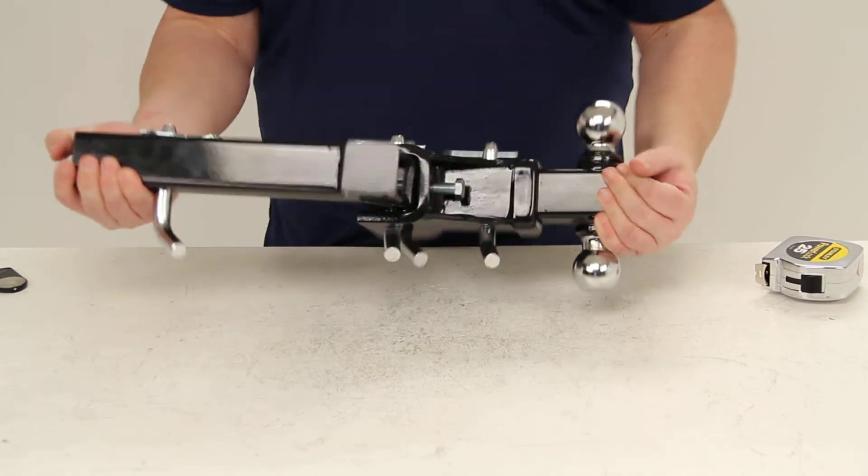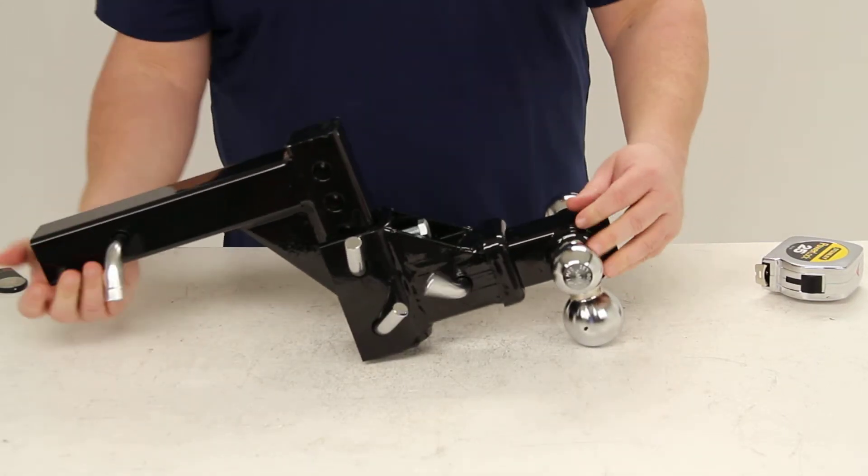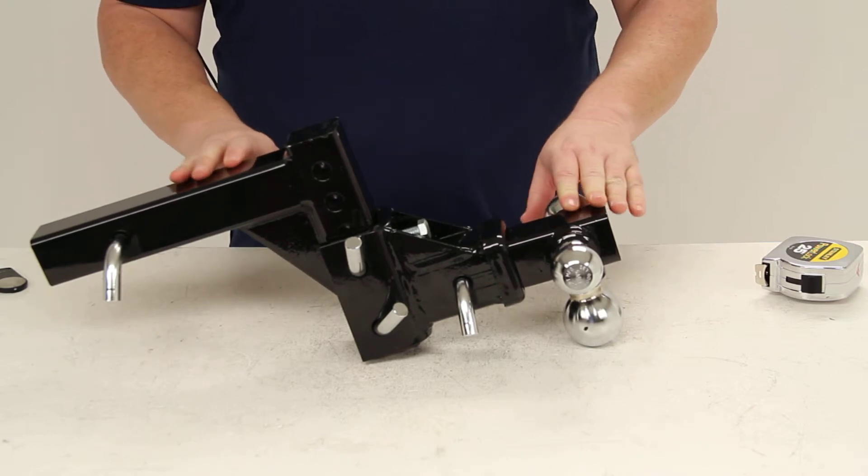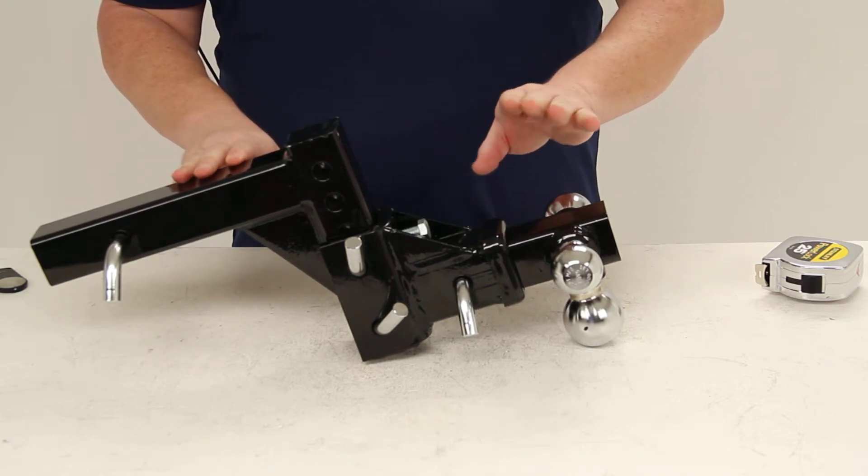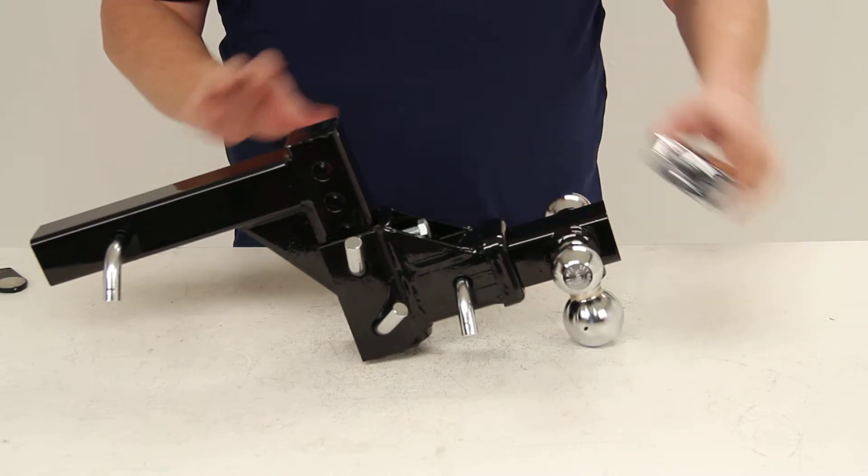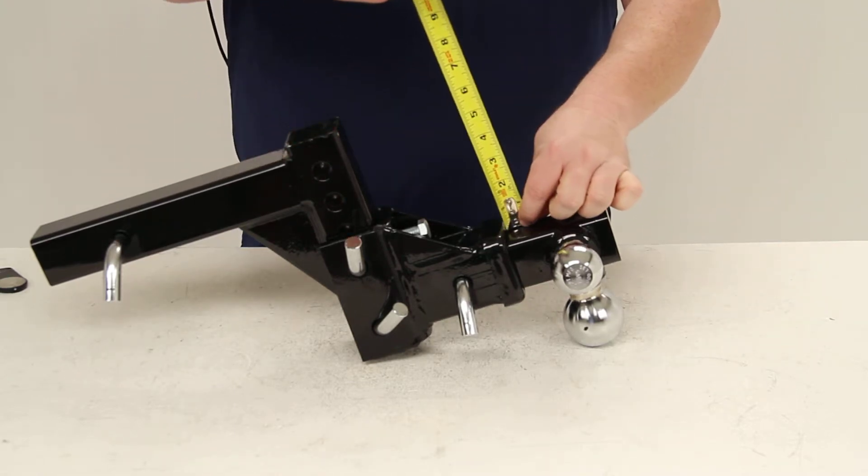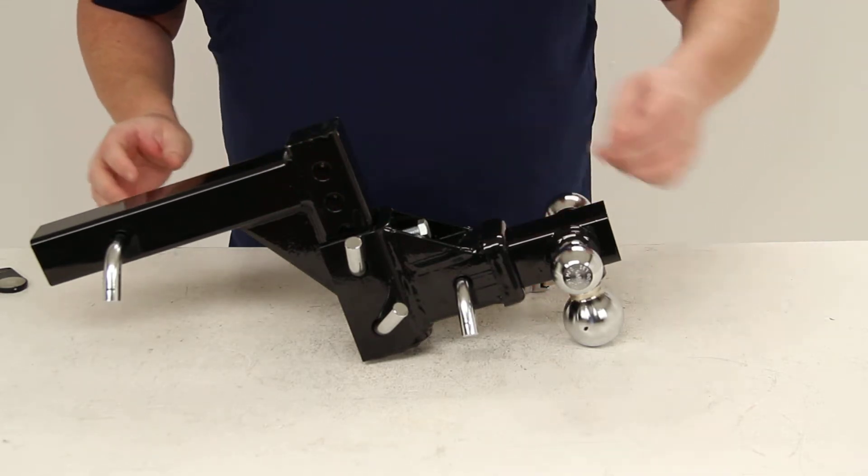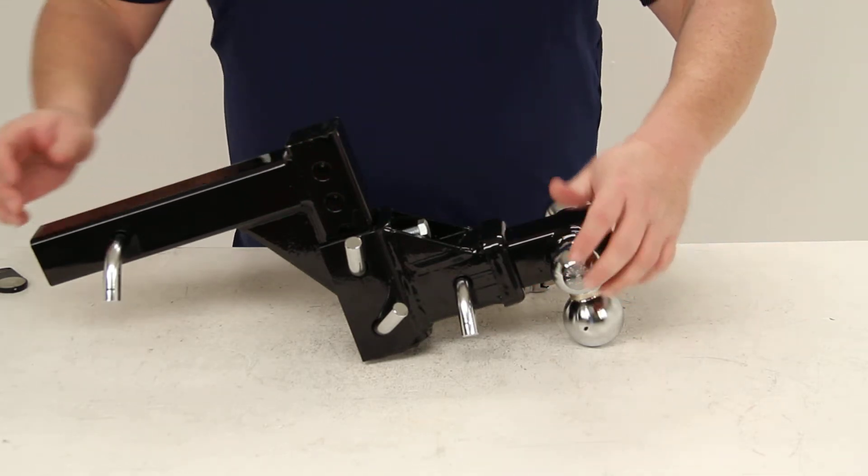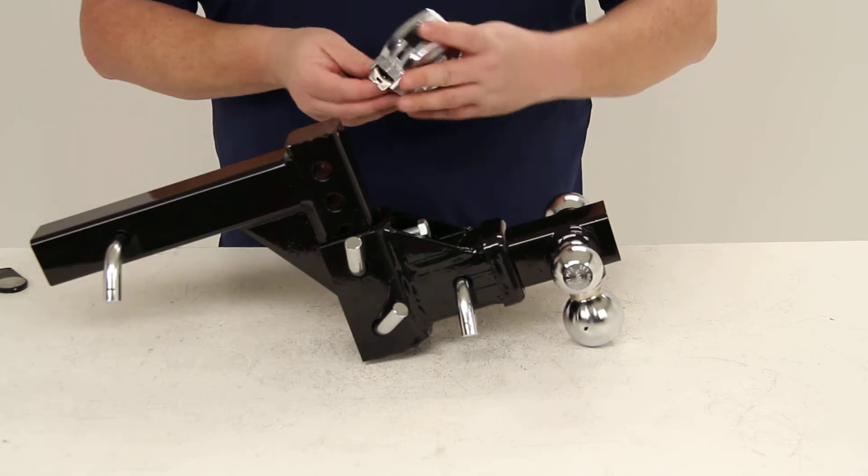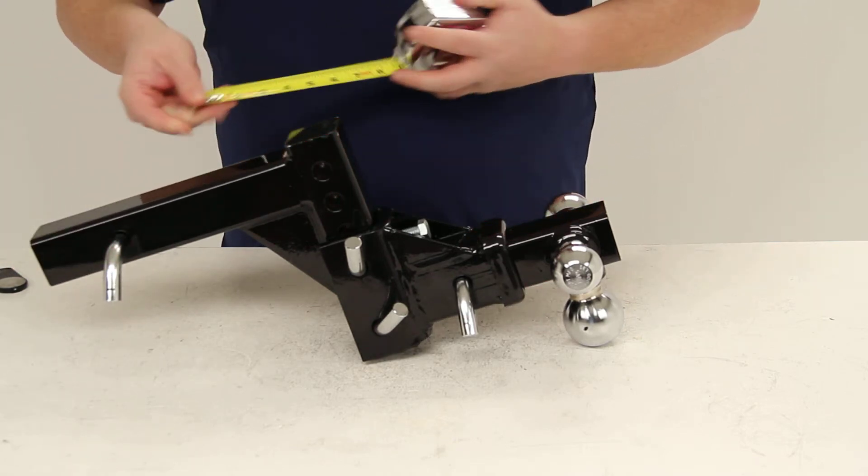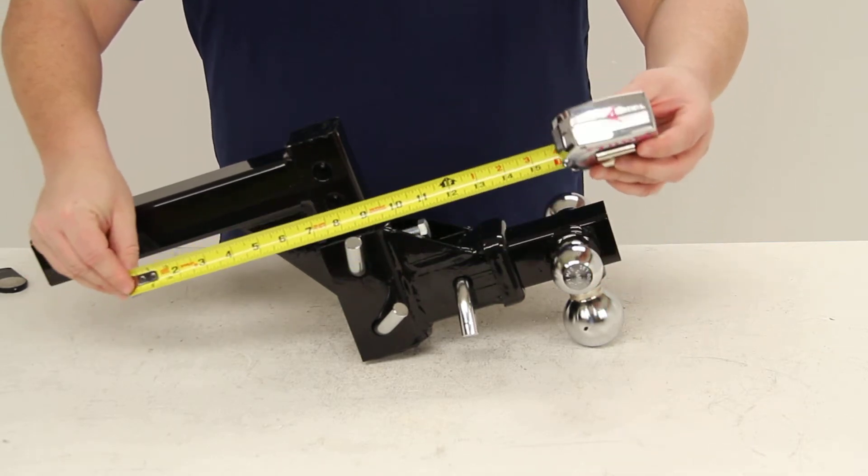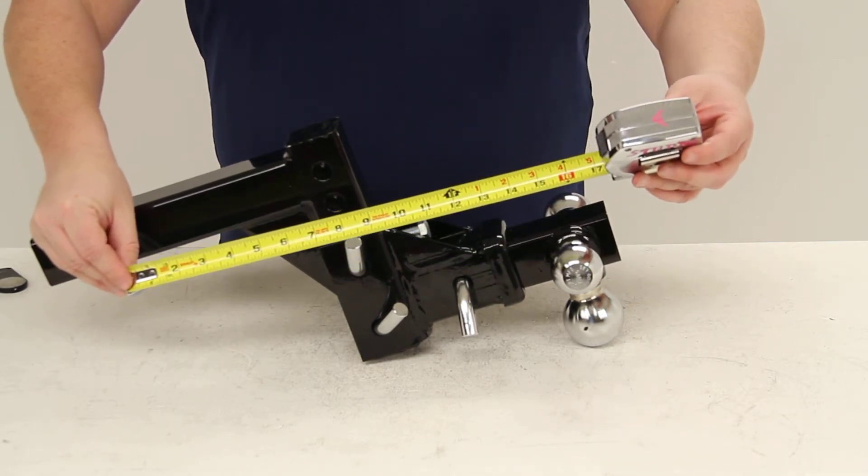Flip this over to show the drop measurement. Again, measure from the top of the receiver bar to the top of the ball mount, and that again is five and three-quarter inches. The length is measured from the center of the ball to the center of the pinhole, and that is sixteen inches.